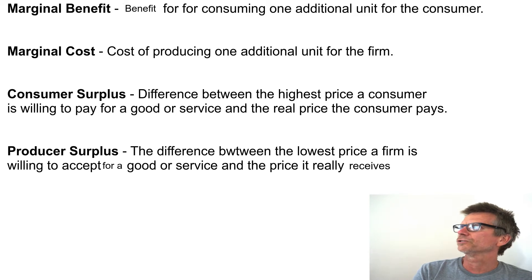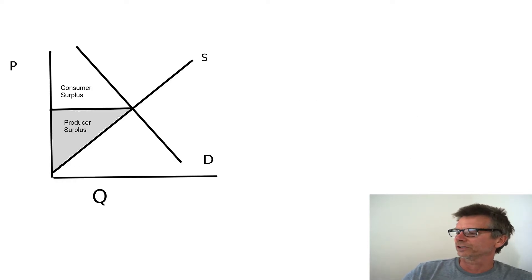Consumer surplus is the difference between the highest price a consumer is willing to pay for a good or service and the real price the consumer pays. And similarly, the producer surplus is the difference between the lowest price a firm is willing to accept for a good or service and the price it really receives.